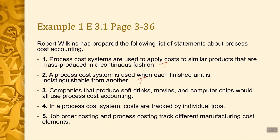Statement three: companies that produce soft drinks, movies, and computer chips will use process costing. This one has a trick in it — we're going to say this is false. It's false because only the soft drinks and the computer chips would use process costing. For movies, we use job order costing because each movie is specific and unique.